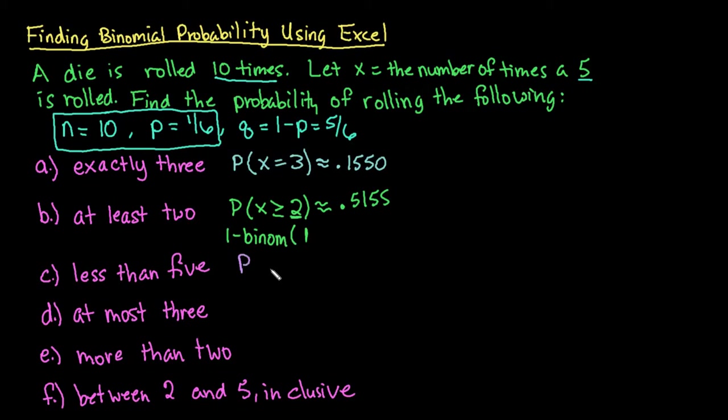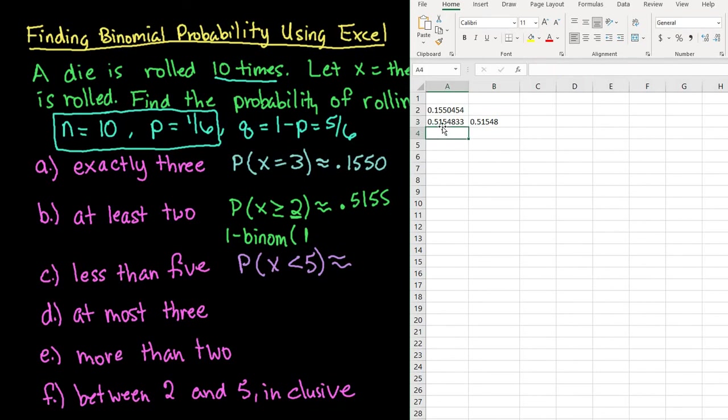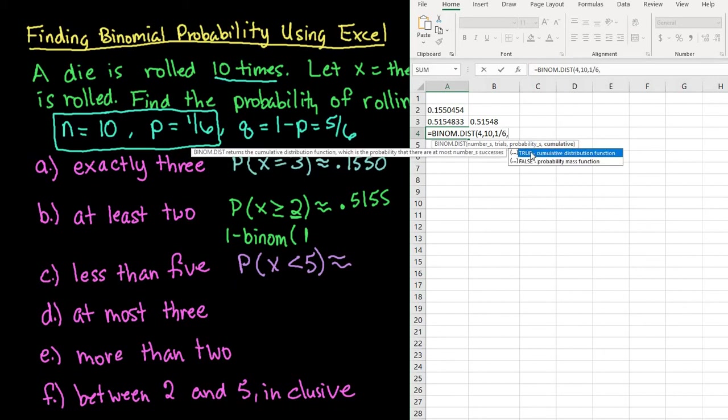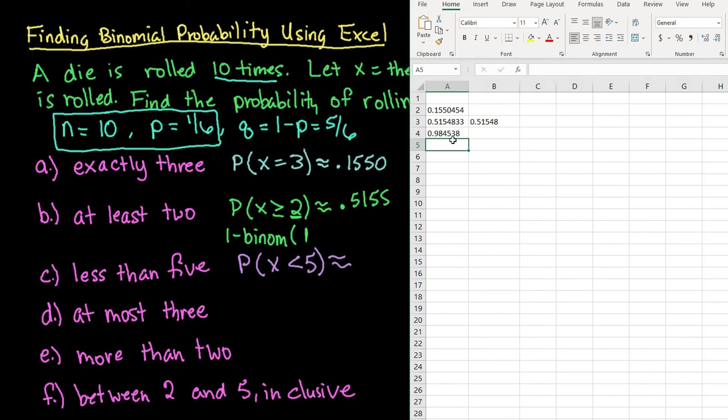Alright. So looking at the next one, we want to find the probability that our x value is less than 5. That means it's 0, 1, 2, 3, or 4. For this one, like I said, you can use either formula, the range formula. For this one, I would just do the binom distribution. My number of trials, I'm going to have to go 1 less than 5 because 5 is not included. So I would stop at 4 with 10 trials. My probability of success is 1 sixth. And the cumulative distribution for this one, I would enter true because I do want to add that value. So 0.9845 would be my answer.